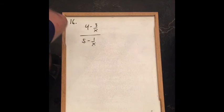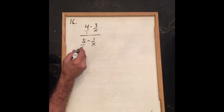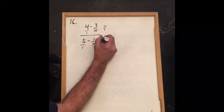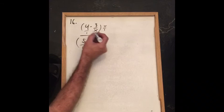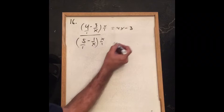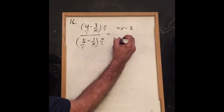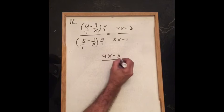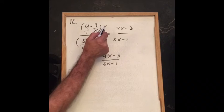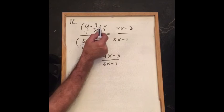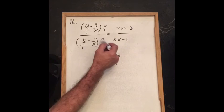For problem 16, we have a compound fraction — a fraction made up of fractions. The common denominator for all four terms is x, so we multiply both the top and bottom expressions by x. Distributing: 4 times x is 4x, and the x cancels leaving minus 3 on top; x times 5 is 5x and the x cancels leaving minus 1 on the bottom. So the answer is (4x minus 3) over (5x minus 1).